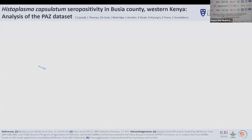Histoplasmosis, caused by the fungal species Histoplasma capsulatum, is a neglected tropical disease with a widespread global distribution. Histoplasma exists in the environment in a saprophytic mycelial form, but following host inoculation, undergoes a temperature-induced morphological transition to its pathogenic yeast form. Subsequent disease progression and dissemination is associated with host immunocompetence.